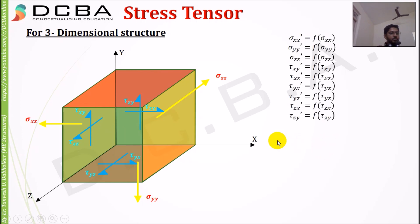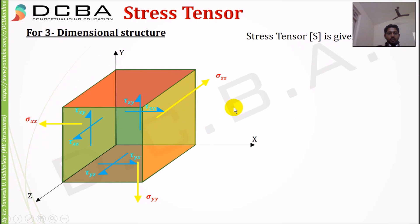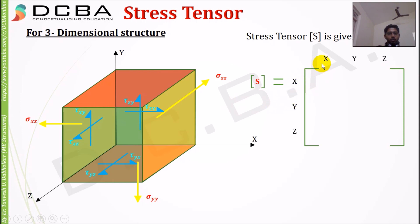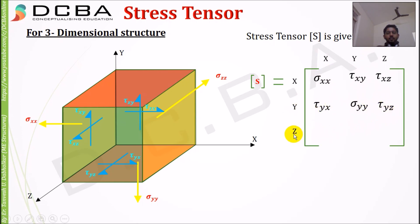Once we remove the redundant terms (the dash terms and the equal shear pairs), the stress tensor for a three-dimensional structure is a 3×3 matrix: (x,x) sigma_xx, (x,y) tau_xy, (x,z) tau_xz; (y,x) tau_yx, (y,y) sigma_yy, (y,z) tau_yz; (z,x) tau_zx, (z,y) tau_zy, (z,z) sigma_zz. This is the complete stress tensor for a three-dimensional structure.